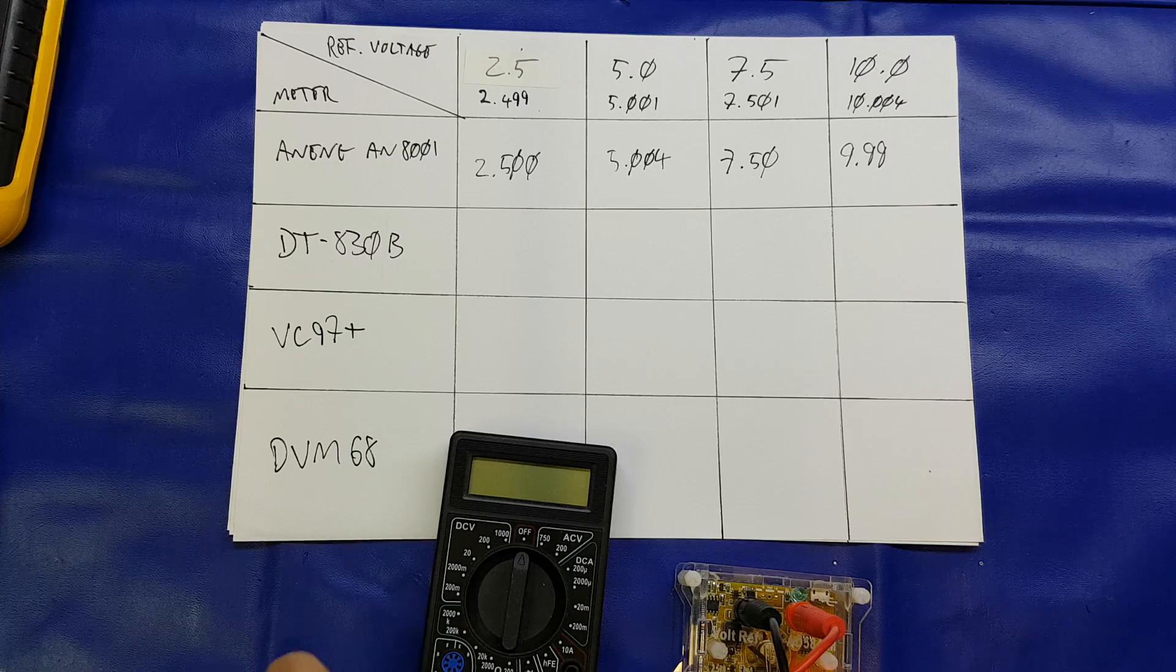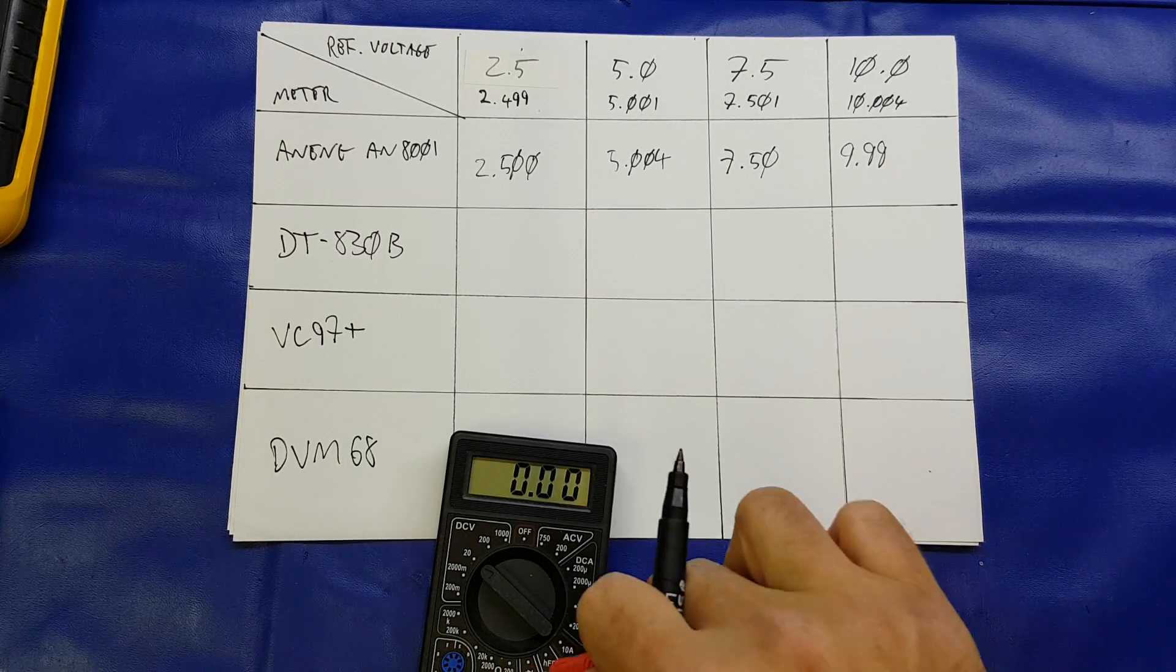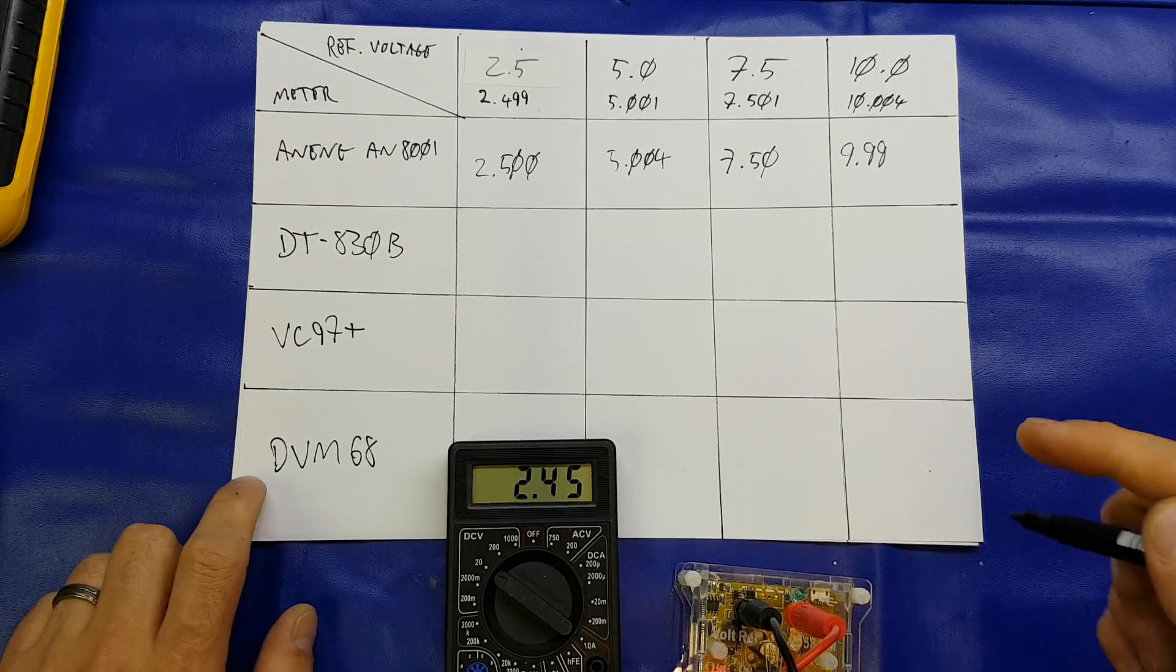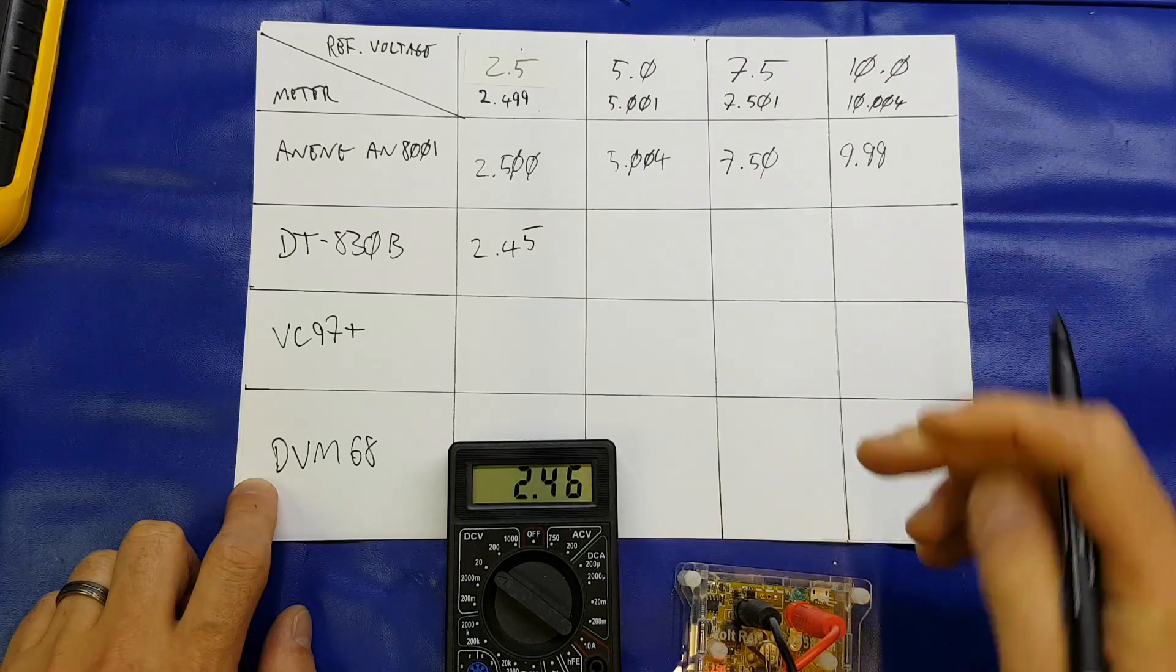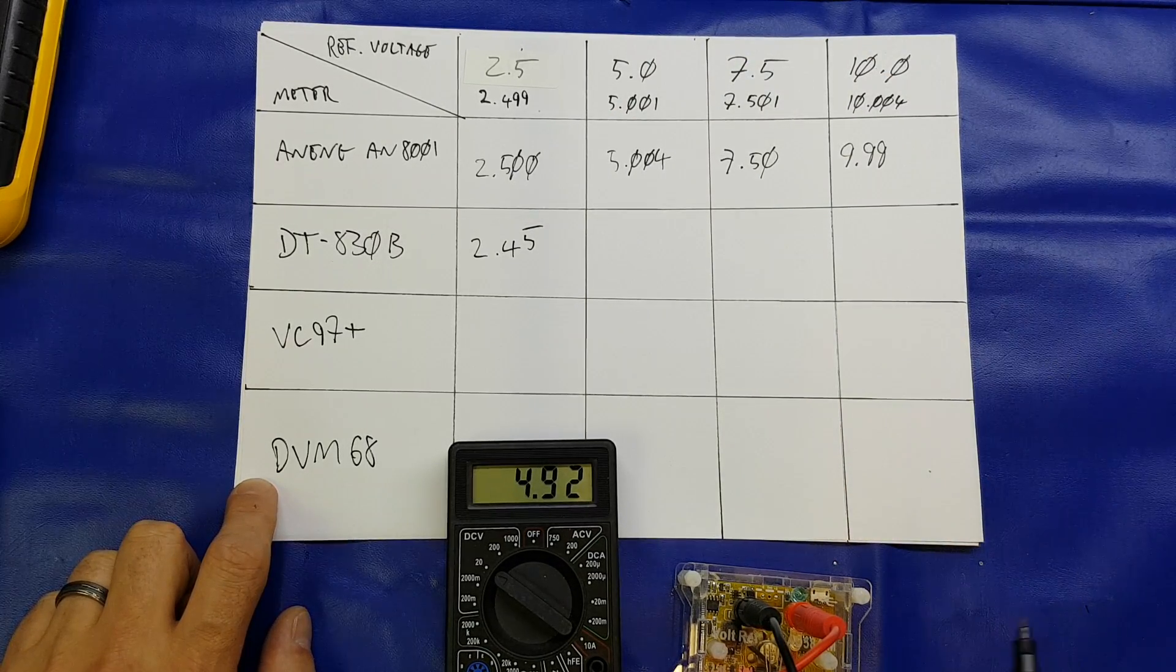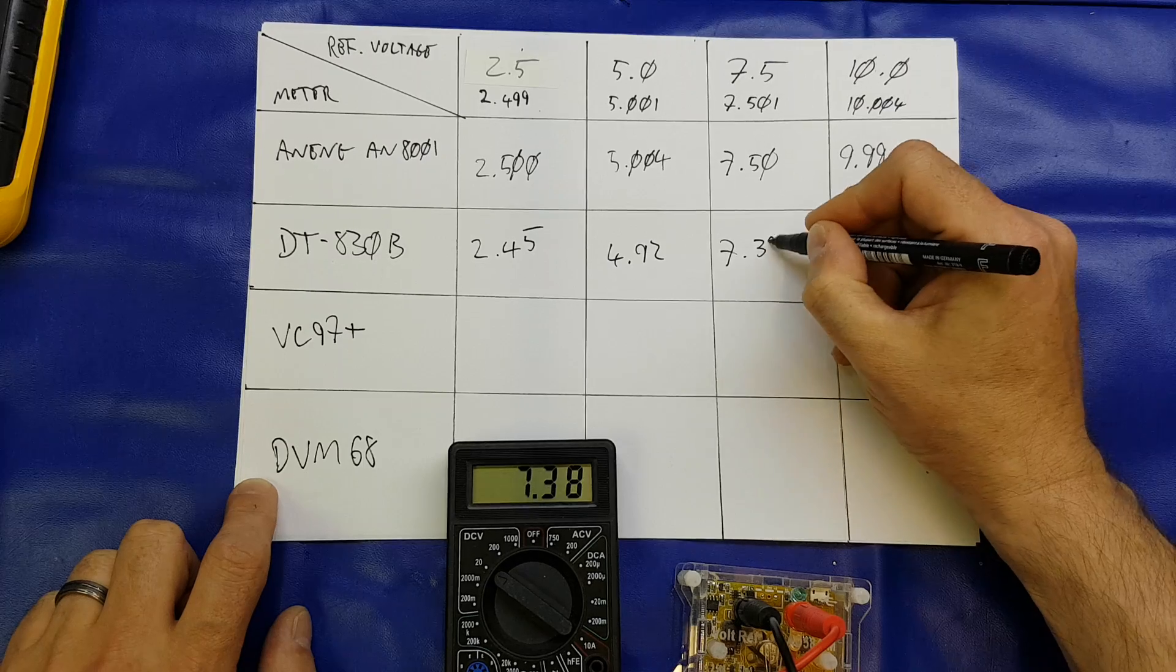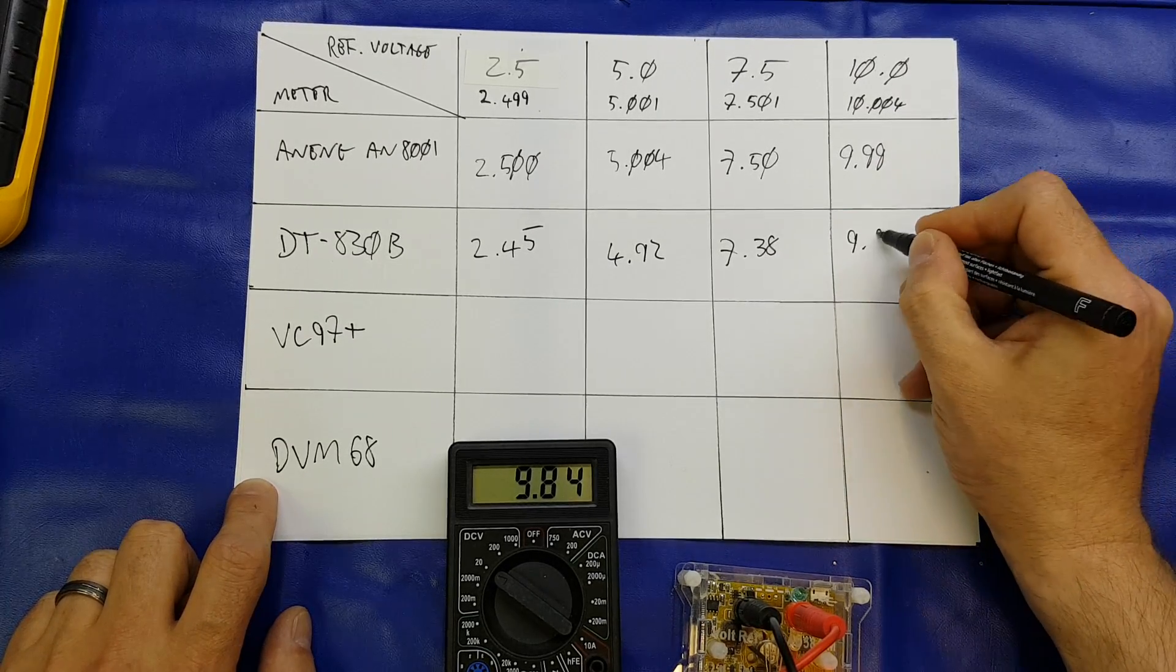On to the 830B. This is the cheapest. You can pick these up for 2 to 3 pounds, including delivery. And we'll start off again with 2.5 volts, and that's displaying 2.45. Of course, it would change as I flipped over. 5 volts is displaying 4.92. 7.5 volts, 7.38. And 10 volts, 9.84.